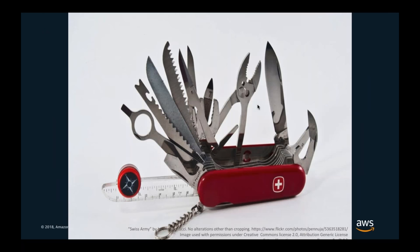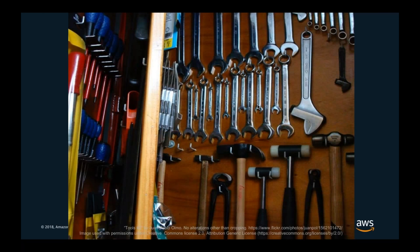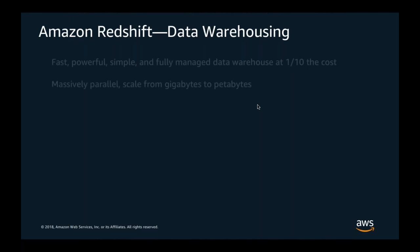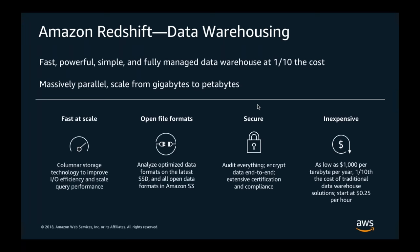At AWS, rather than giving a single Swiss Army knife tool, we give you purpose-built tools that work great for specific use cases. The first is Amazon Redshift — a fully managed data warehouse as a service. You can spin up a large data warehouse in minutes, fully managed by AWS, at typically one-tenth the cost of traditional data warehouses.